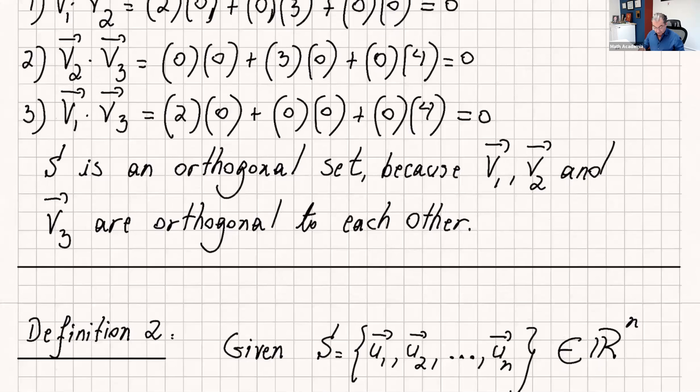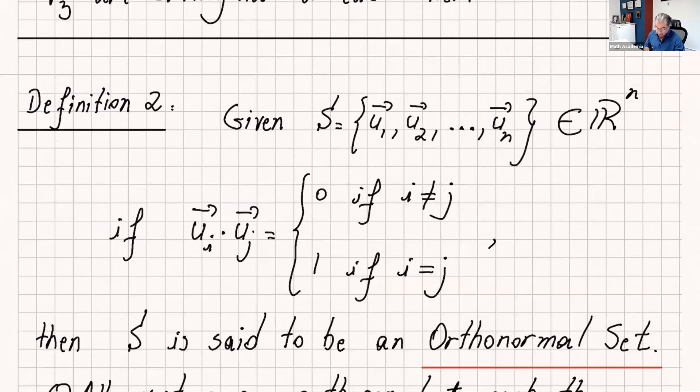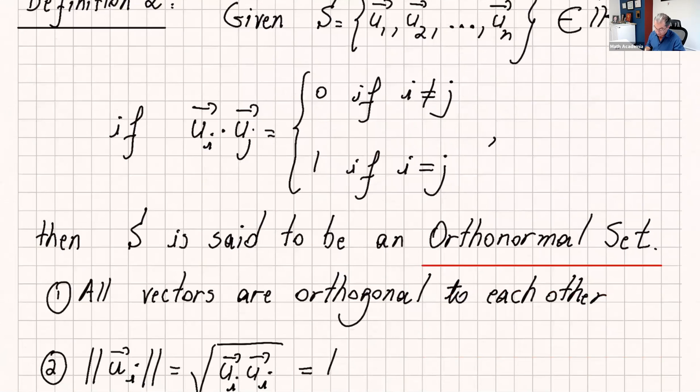Now let's see what is orthonormal. If you have a set of vectors again in R^n, this time I call them u1, u2, dot dot dot un. If you do ui dot uj, if you get zero if i is not the same as j, and you get one when i equals j, that means ui dot ui or u1 dot u1 gives you one, then you say this is an orthonormal set.